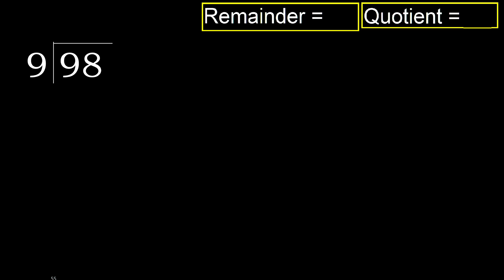98 divided by 9. 9 is not less, therefore start with 9. 9 multiplied by which number is nearest to 9 but not greater? 9 multiplied by 2 is 18 — 18 is greater. 9 multiplied by 1 is 9, which is not greater.